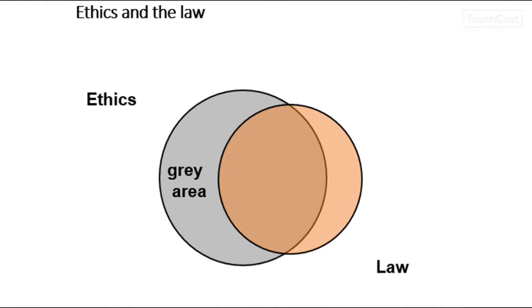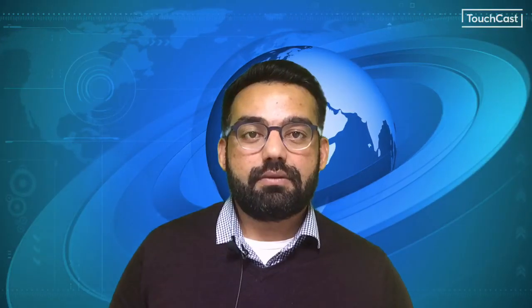For example, just as there is no law preventing you from being unfaithful to your significant other, although this is perceived by many to be unethical, so there's no law in many countries preventing businesses from testing their products on animals, selling landmines to oppressive regimes, or preventing their employees from joining a union. These are issues that many feel very strongly about — what we call the gray areas in business ethics language.